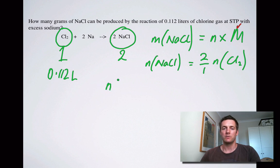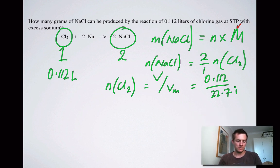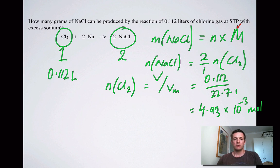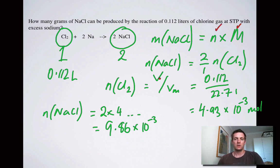The number of moles of chlorine: we're told its volume, so we use n = V / Vm, which is 0.112 divided by 22.71, giving 4.93 × 10⁻³ moles. The number of moles of sodium chloride is twice that number: 2 × 4.93 × 10⁻³ = 9.86 × 10⁻³ moles. Now we have the number of moles of sodium chloride, so we can work out the mass.